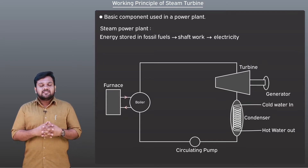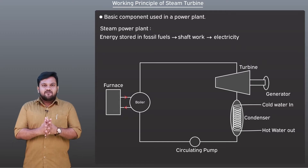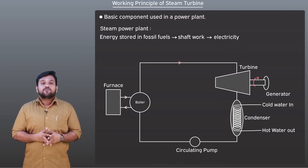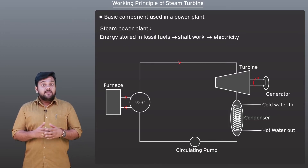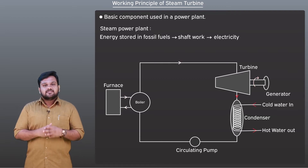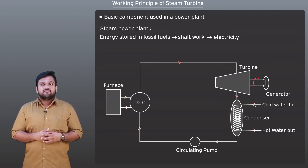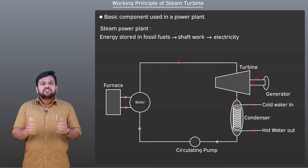The steam from the boiler, which is at high temperature and pressure, expands in the turbine to produce work and changes to low temperature and pressure. The steam leaving the turbine is condensed into water in the condenser. The water is then pumped back to the boiler by a feed pump and the cycle repeats.